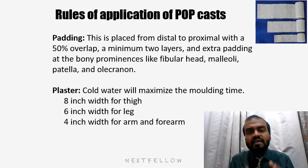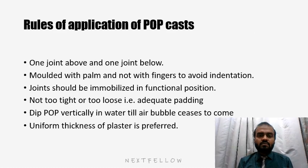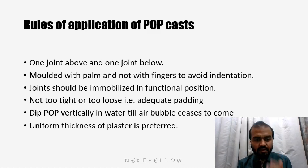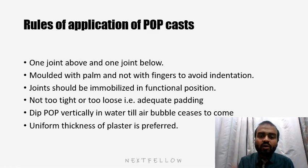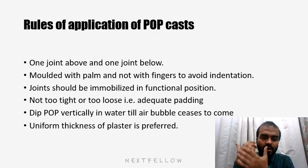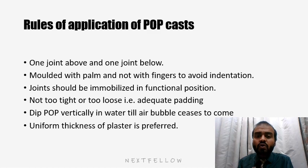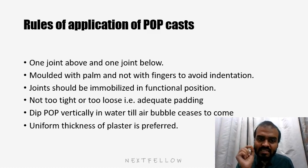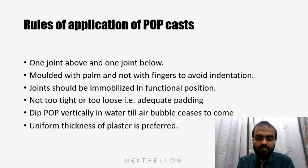As a thumb rule, 6 inches can also be used for the lower limb and 4 inches for the upper limb. A POP cast should always be applied one joint above and one joint below the fracture. Mold it with the palm and not with fingers, as fingers may indent the cast. Joints should be immobilized in a functional position. The cast should not be too tight or too loose — it should be snugly fitting. Dip the POP vertically in water until air bubbles cease to come out, and uniform thickness is always preferred.